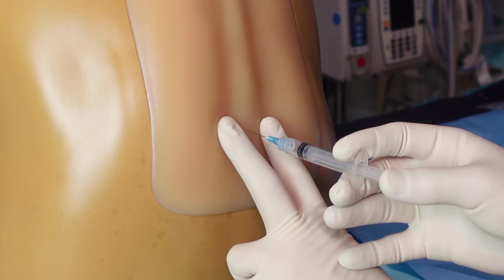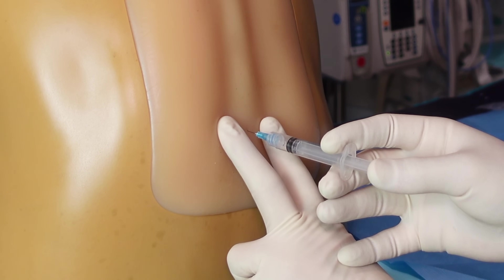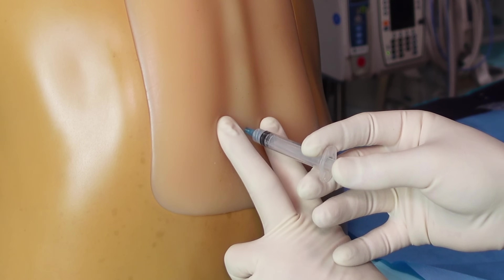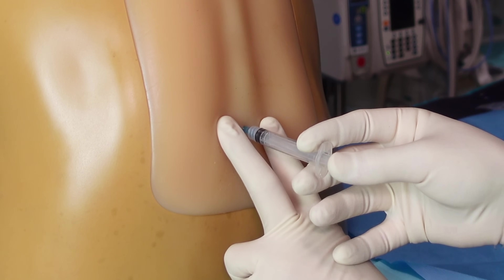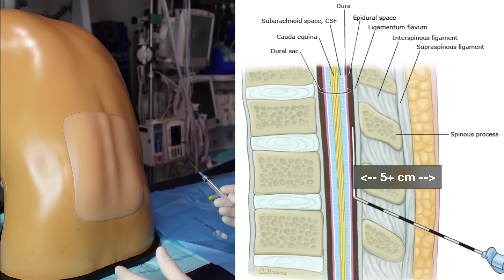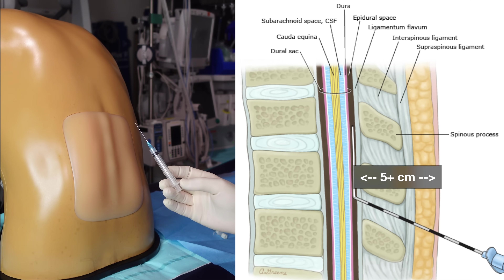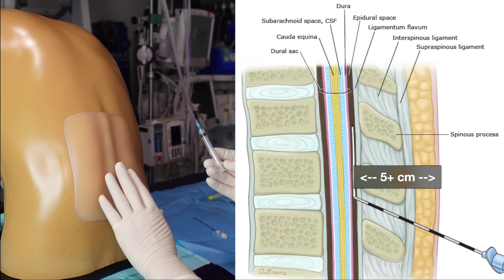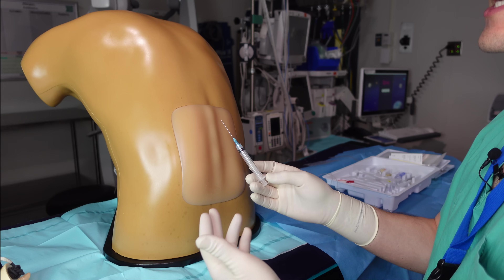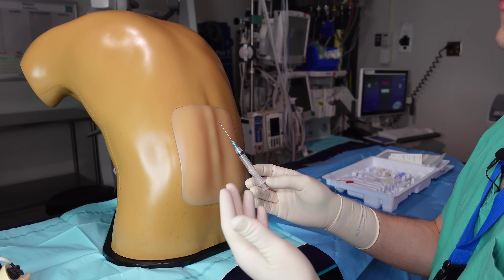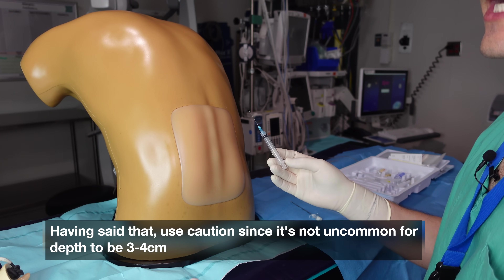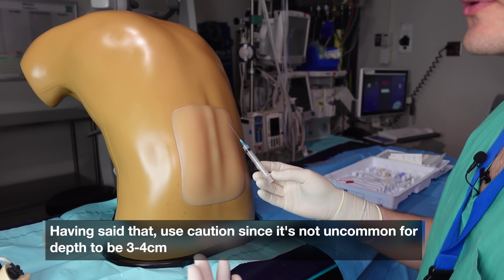Some people also like to use this needle as a finder needle to make sure that you don't run into any type of bone as you inject deeper. It's worth pointing out that the epidural space is typically at least five centimeters deep from the skin — possibly more depending on the patient's BMI — and a needle like this is only about four centimeters long, so it's generally not going to be deep enough to even reach the epidural space.